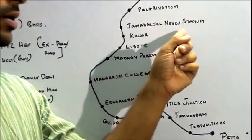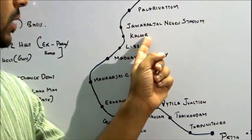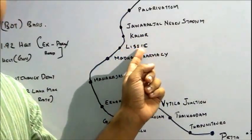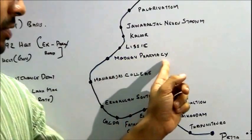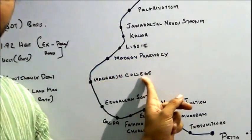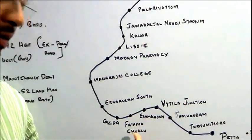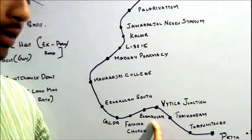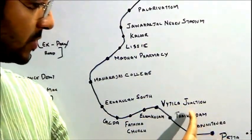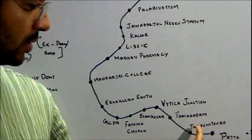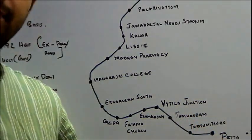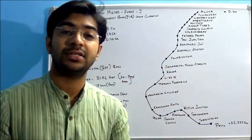Then we have Kaloor, Lissie, Madhava Pharmacy, Maharaja's College, Ernakulam South, GCDA, Town Hall, Ernakulam North, MG Road, then Vytilla Junction, Thaikoodam, Palarivattom, Thrippunithura and Petta Station.